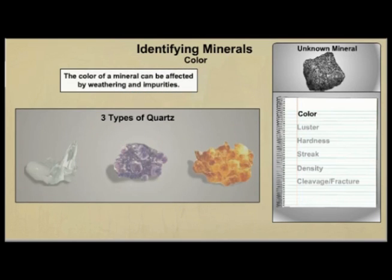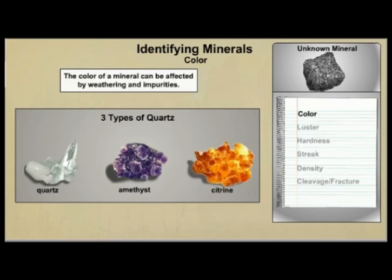For example, this quartz is clear. Amethyst is a type of quartz, but it is purple because of impurities. Citrine is a form of quartz as well, but impurities give it an orange color.